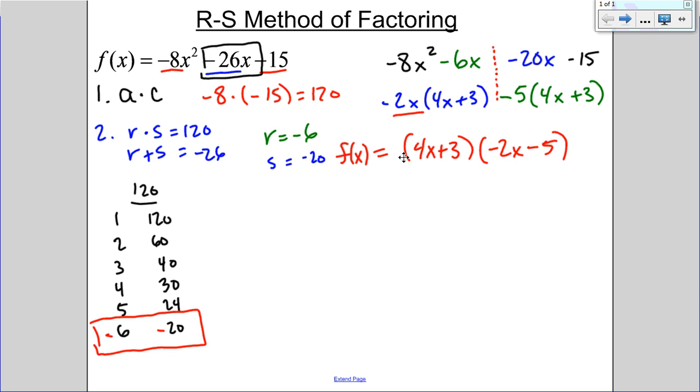And if you need to check, distribute it. We can check it real quick here. So, here, negative 8x squared, I get a negative 20x minus a 6x minus 15. And I feel pretty good about myself.